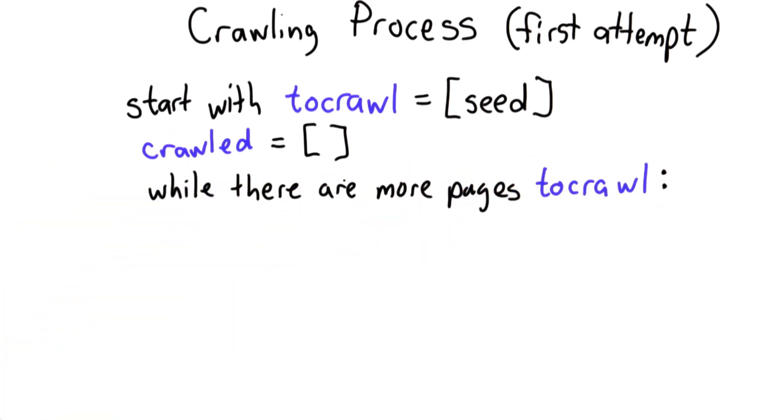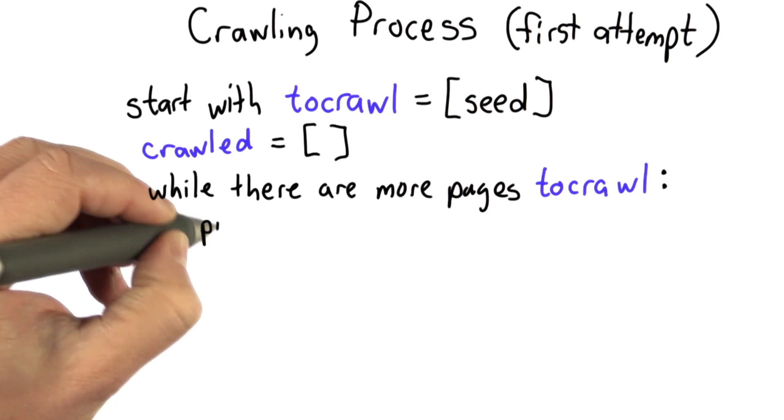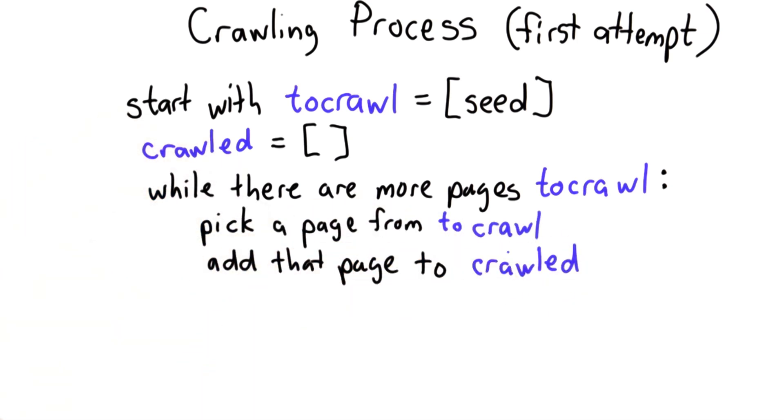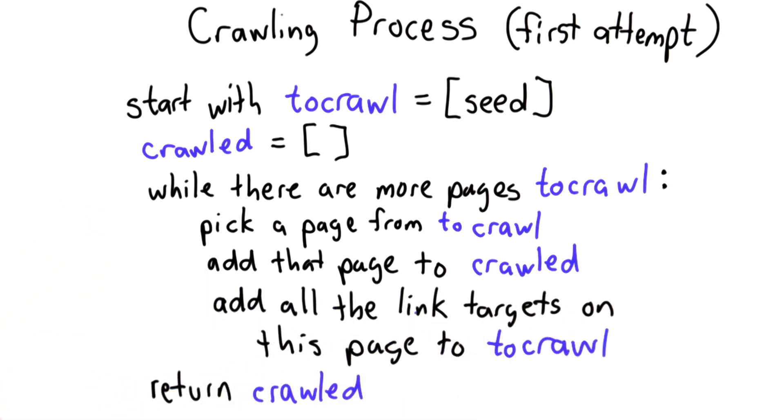We're going to keep going as long as there are more pages to crawl. And for each step, we're going to pick one of the pages. We'll add that page to crawled to keep track of the fact that we've crawled it. Then we'll find all the link targets on this page and add those to tocrawl. We'll keep going as long as there are more pages in tocrawl.